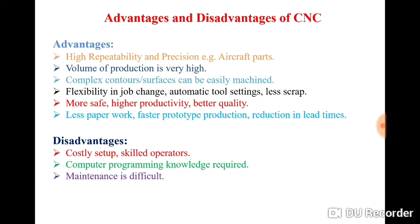The next advantage is that complex contours or surfaces can be easily machined. With a CNC machine you can easily manufacture complex surfaces. On a lathe machine there are two axes: X axis along the diameter and Z axis along the length. On a milling machine there are three axes: X and Y along the table, and Z perpendicular to the table. You can also work on four-axis or five-axis machines by rotating the table or spindle, allowing you to manufacture jobs with complex contours.